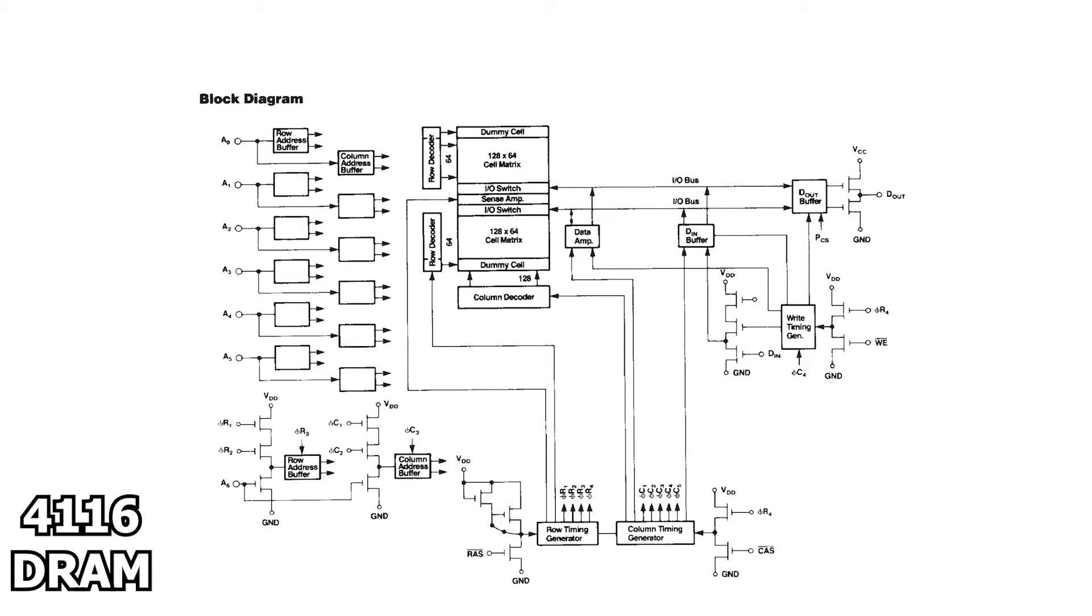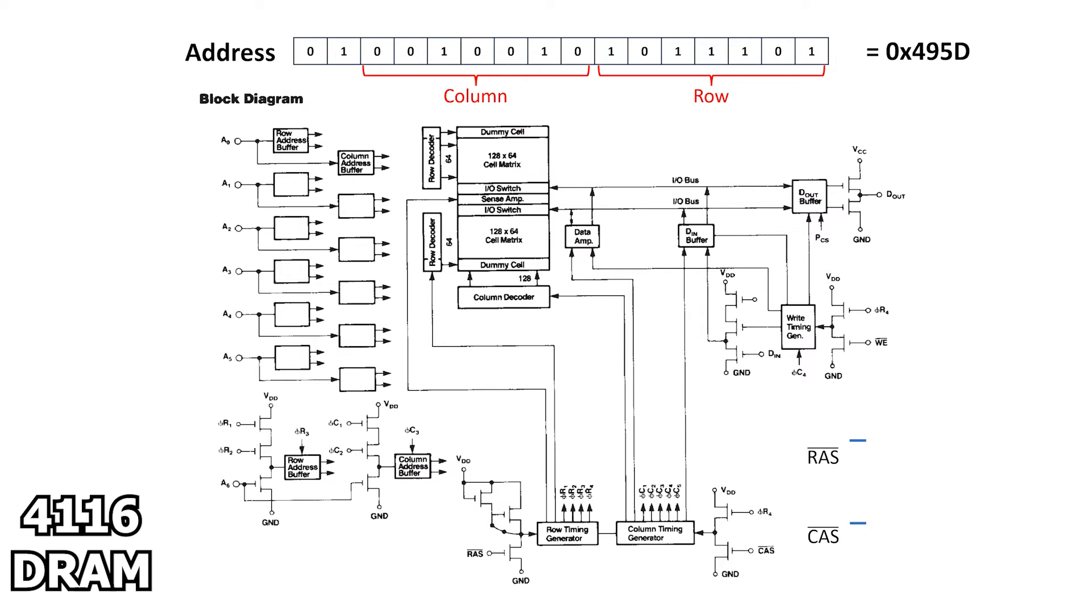This is a block diagram of the chip internally. Let's say we want the Z80 to perform a main memory read at location 495D hex. We designate the bottom 7 bits to be the row address, which is 5D, while bits A7 through A13 form the column address, which is 12 hexadecimal in this case. Let's look at the read cycle. The first thing that happens at the start of a read cycle is that some external hardware presents the 7-bit row address on the external pins of the DRAM.